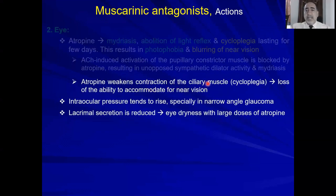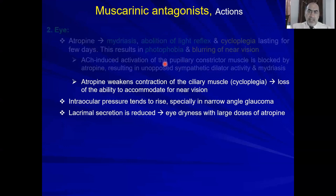On the level of the ciliary muscle: parasympathetic activation accommodates the eye for near vision during rest and digest. The opposite — loss of accommodation for near vision — is called cycloplegia. Regarding intraocular pressure: parasympathetic activation of the constrictor pupillary muscle moves the iris out of the way so aqueous humor can pass through the canal of Schlemm, decreasing intraocular pressure. Therefore, atropine is contraindicated in glaucoma.